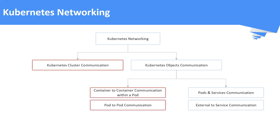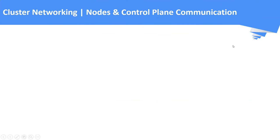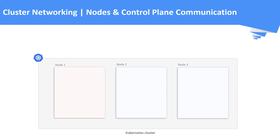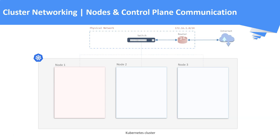In this lecture, we will be discussing about the cluster networking and pod networking. Let us now discuss how the Kubernetes control plane and the nodes communicate with each other. As we all know, the Kubernetes cluster is composed of master nodes and worker nodes. These nodes can be a physical machine or a virtual machine. For this case, let us assume it is a physical machine.